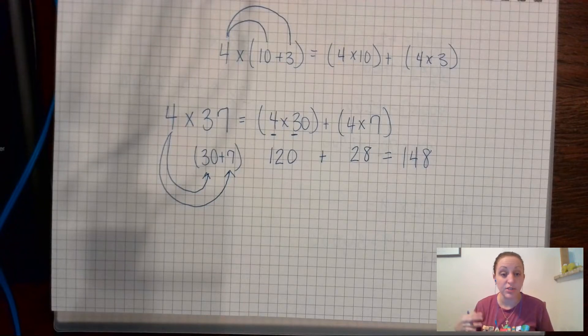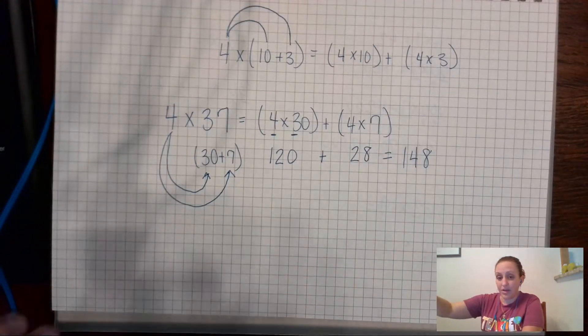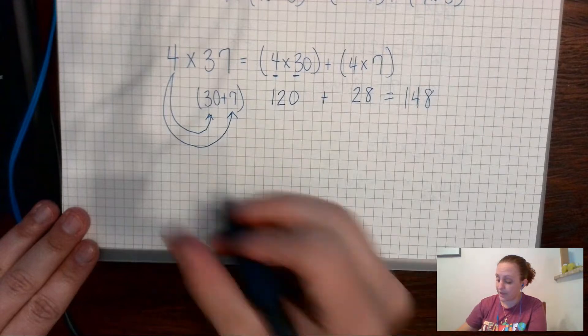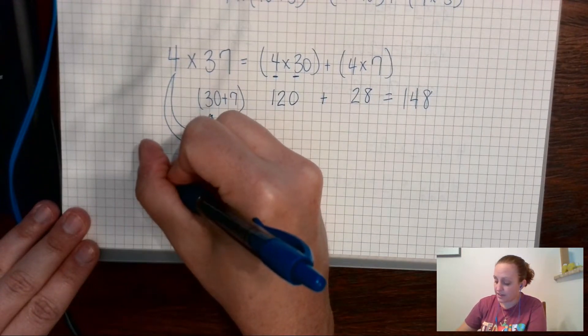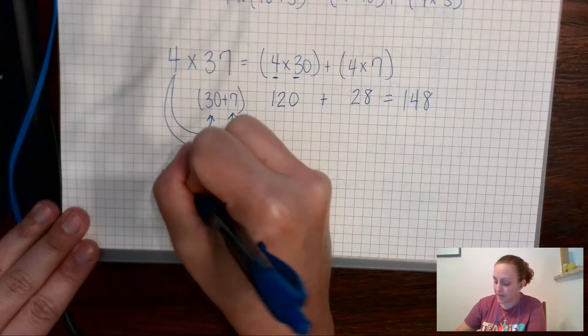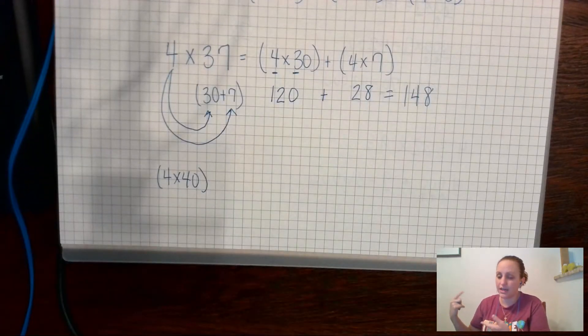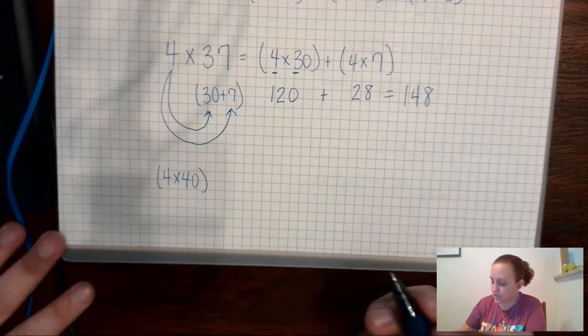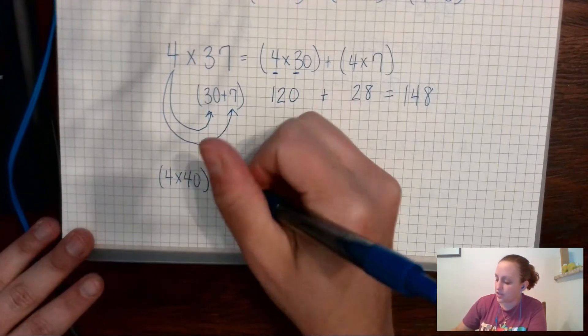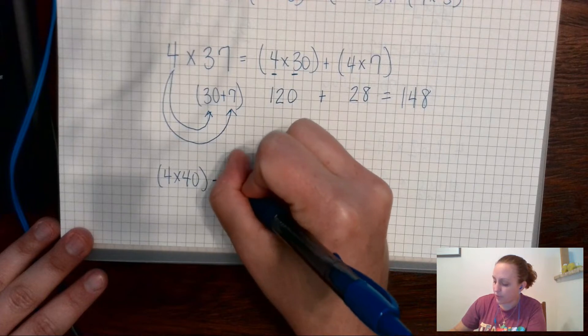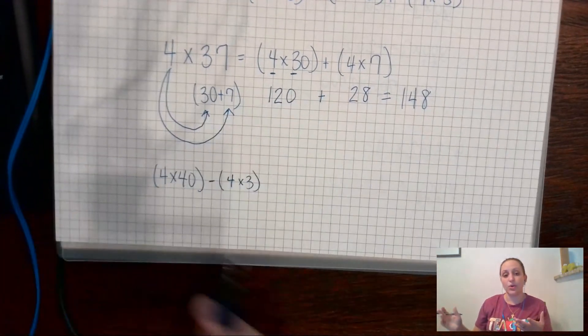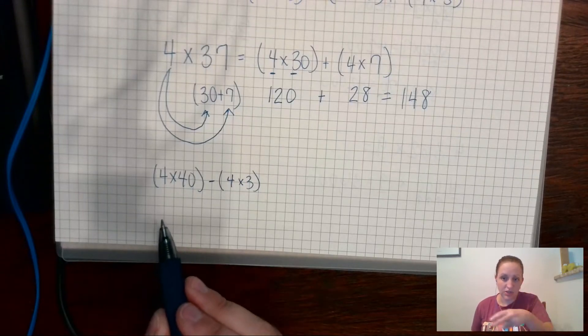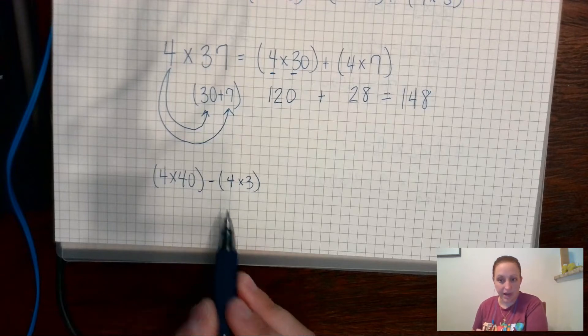Another way that you can look at this is saying, well, 37 is really close to 40. So if I did 4 times 40, well what did I have to do to get up to 40? I had to add 3, so now I'm going to take away 3. Remember that computation that we learned in the last unit? So we would do 4 times 40 minus 4 times 3. I added the 40, or to get to the 40 I added 3, so now I'm going to take away the 3 to get back to what the actual answer would be.